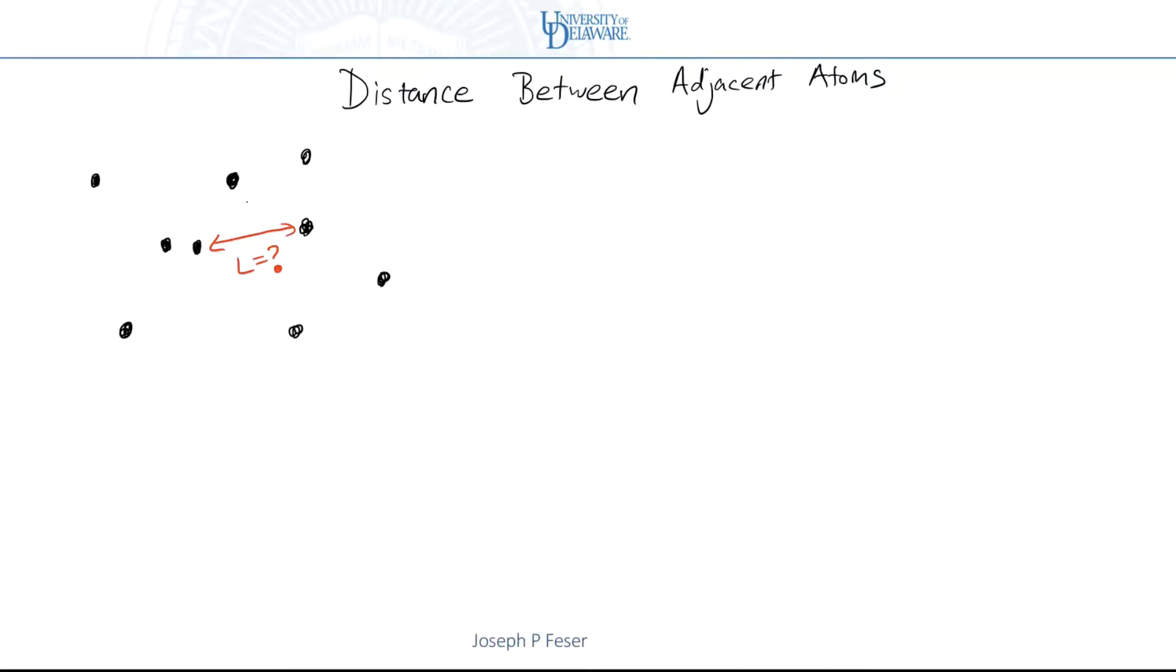Alright, so in this video the goal is to try and estimate the distance between adjacent atoms in a gas. What I've done here is I've sketched a picture of a couple, let's call them argon atoms maybe, that are sort of randomly distributed and this is a fairly realistic picture.